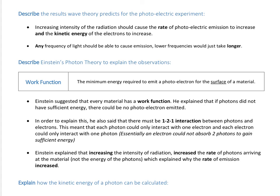Einstein put these two things together and suggested how he could explain the other observations. If we increase the intensity of the radiation, you've increased the number of photons arriving at the material per second but not changed the energy of those photons - you have to change the frequency for that. So if you increase the rate of photons, you should have more electrons escaping per second, which explains that observation. And that also links to how intensity couldn't change kinetic energy - by changing the intensity, you don't change the energy each photon has, you just change the number of photons.